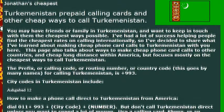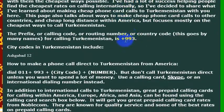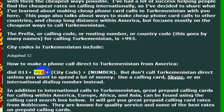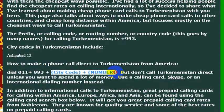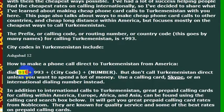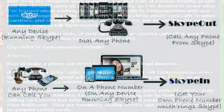If you want to call Turkmenistan directly, you would dial the country code of 993. To get an outside line from the United States, you would dial 011, then the country code, which is 993, and then the phone number that you are trying to reach. 011 is the international dialing code from the United States, and 993 is the country code for Turkmenistan.